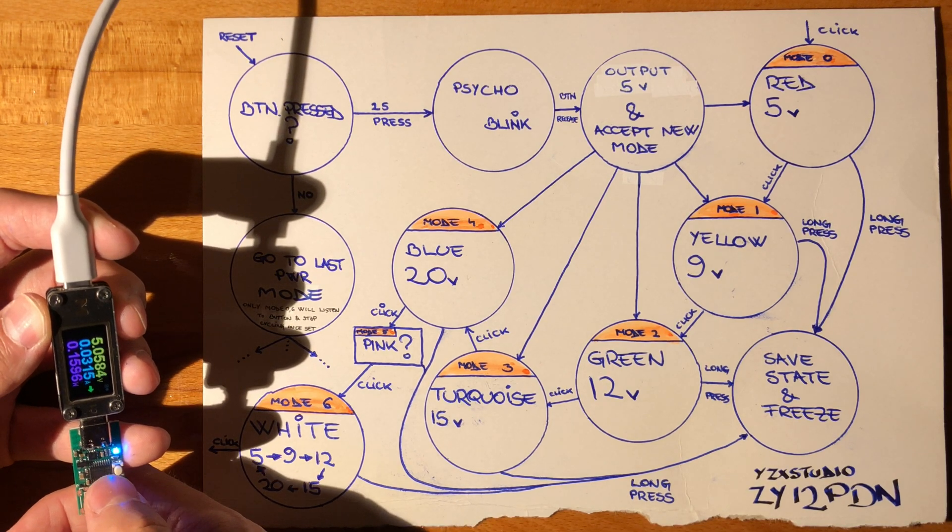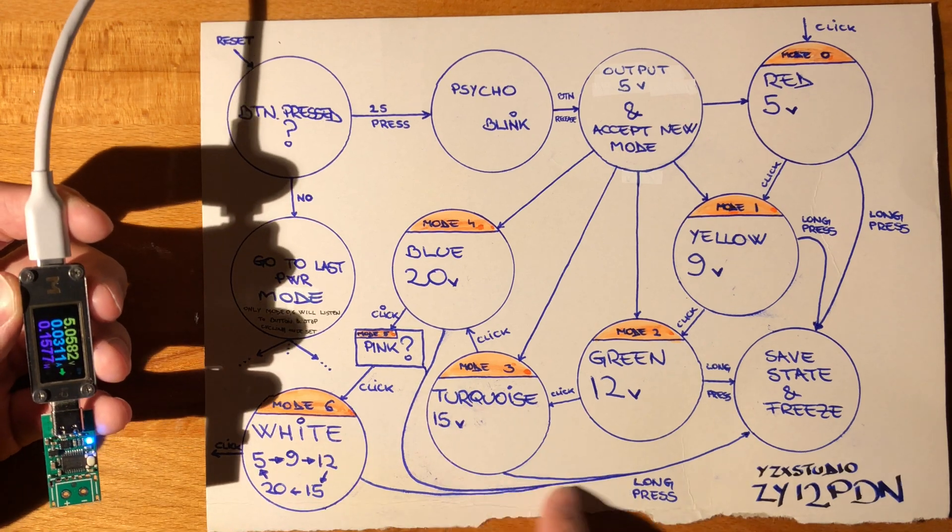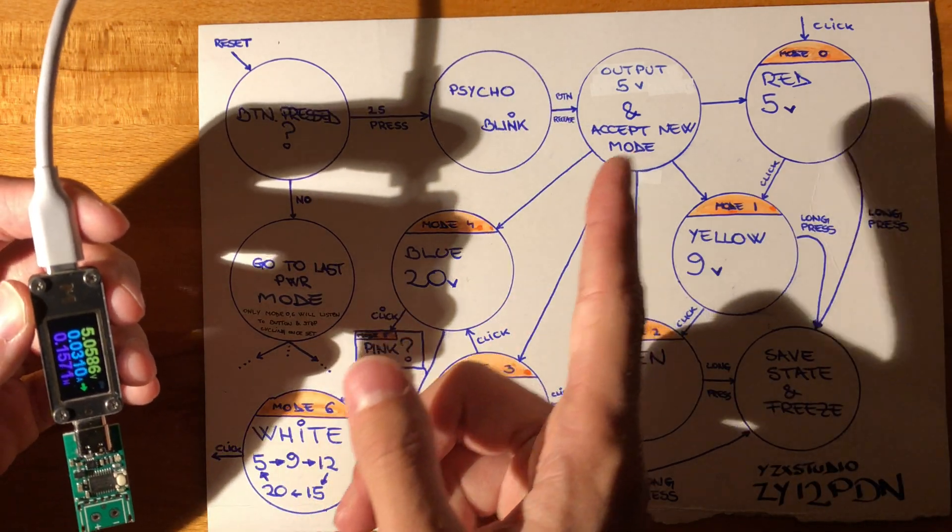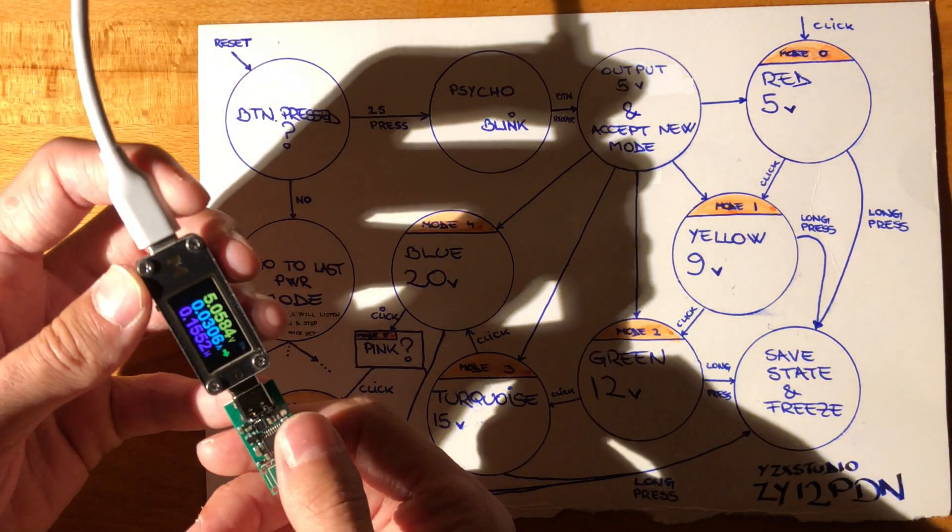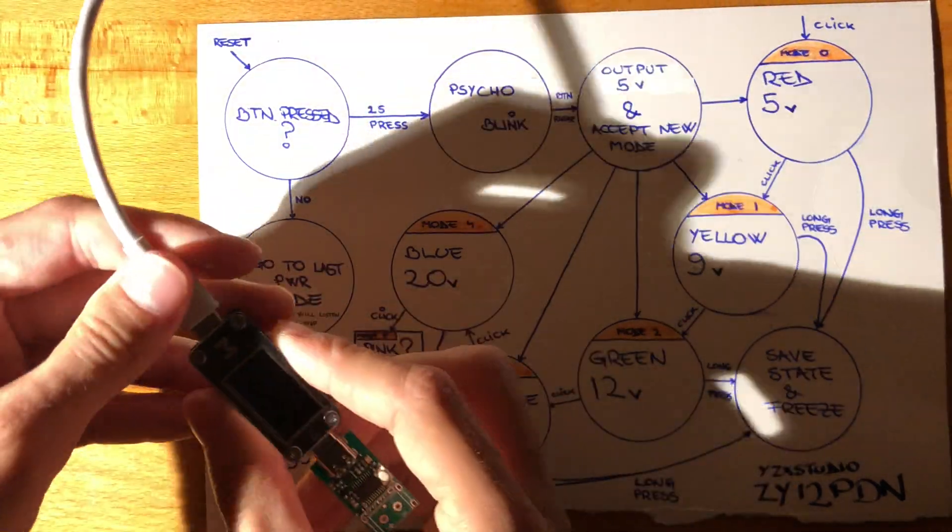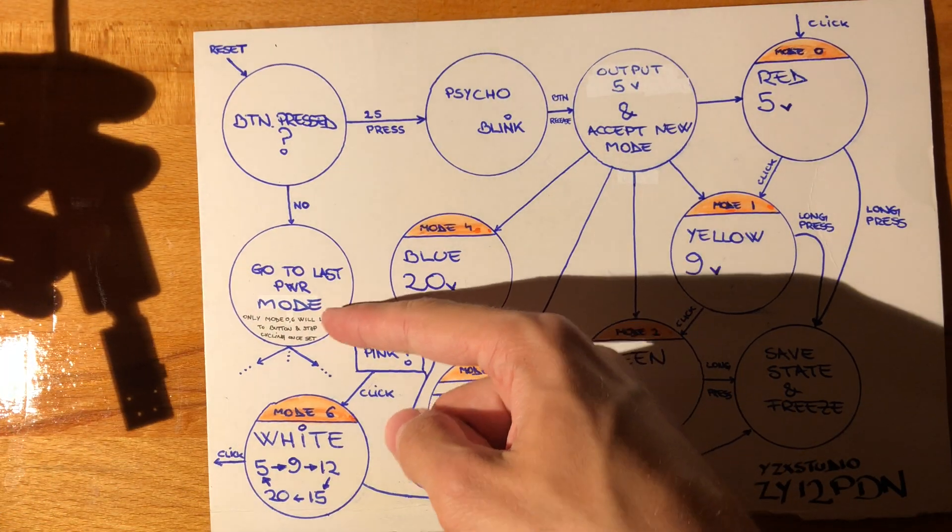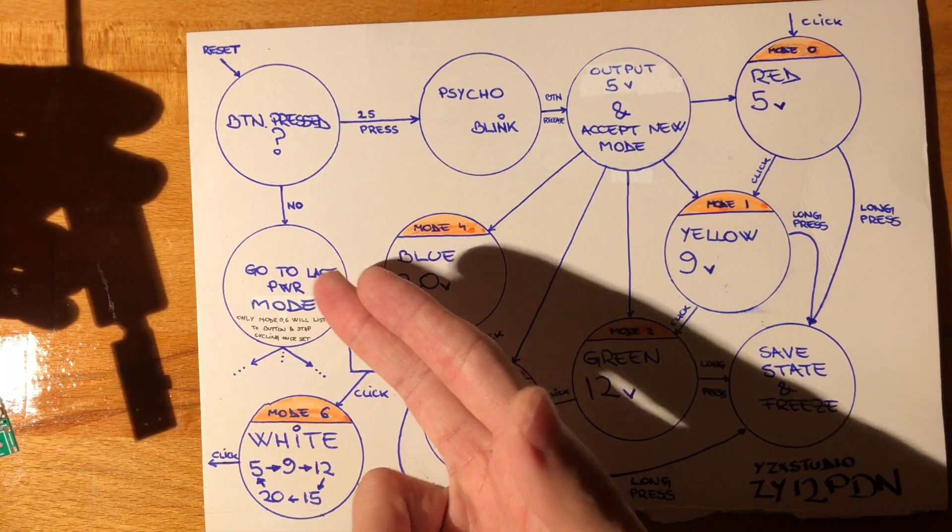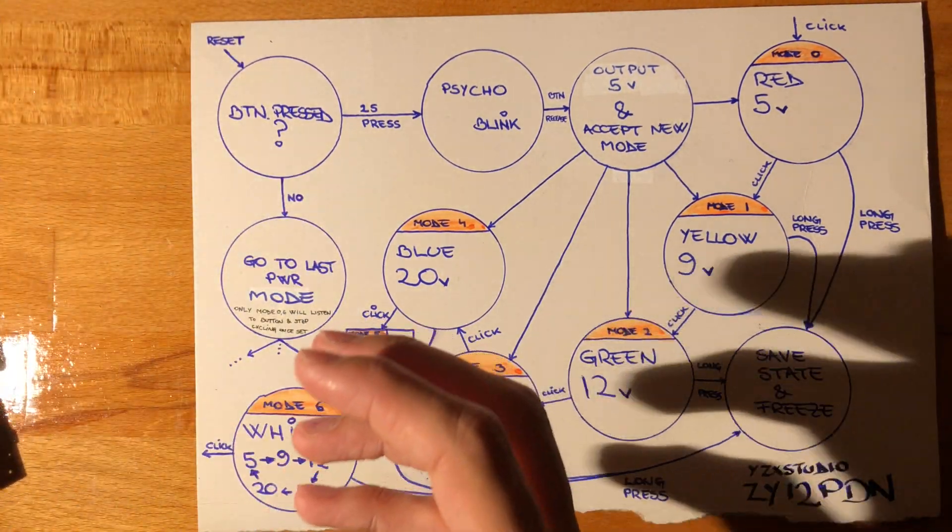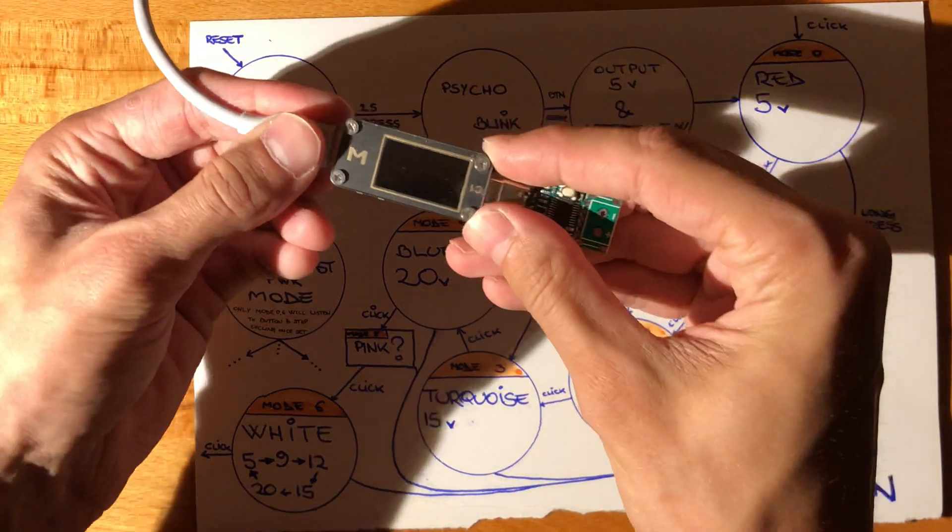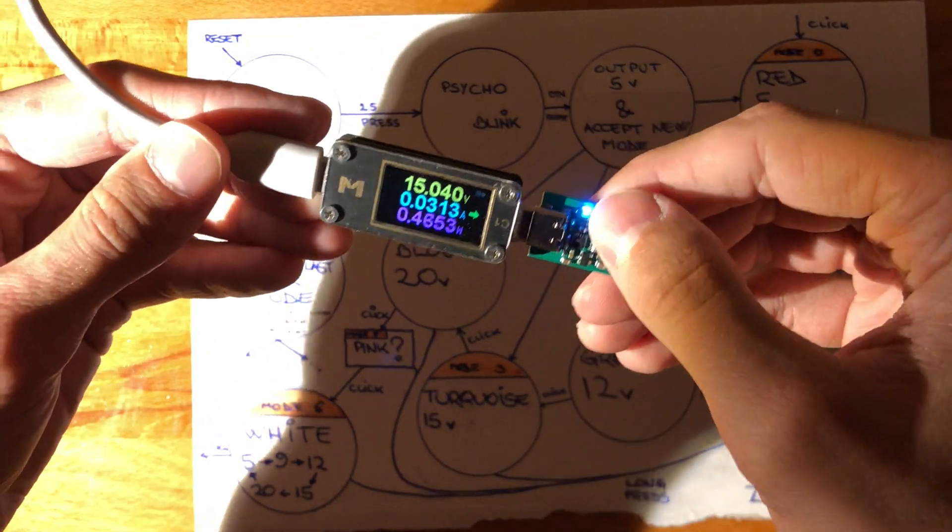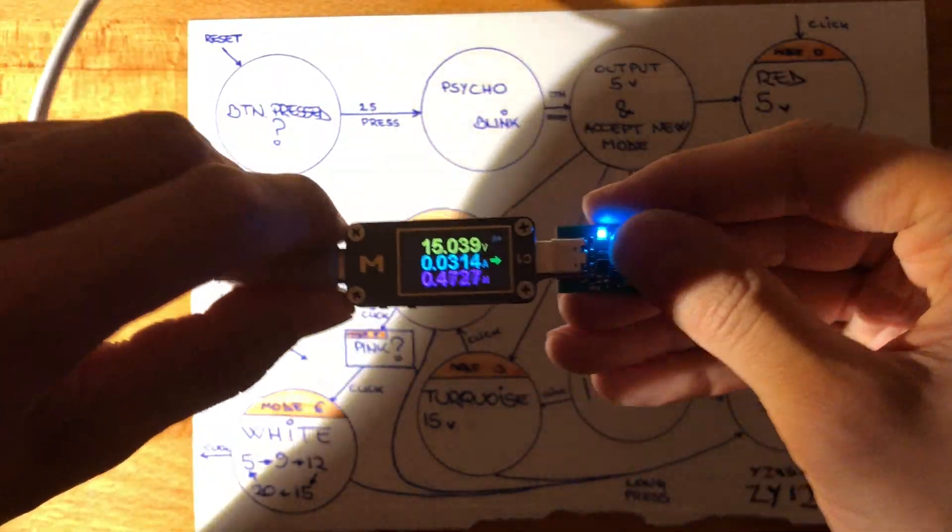It goes green, turquoise, blue, pink, white, and then red again. So let's put it into turquoise and long press. Then it goes dark, still outputs 5 volts, and it freezes - it doesn't do anything, it's stuck. You have to reset it. So we unplug it and now it will boot into the last power mode - technically the saved power mode. I'm not going to correct this, although the temptation is there and it is burning a hole inside of me. And we have 15 volts.